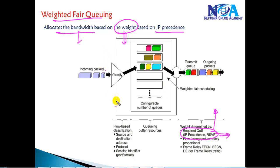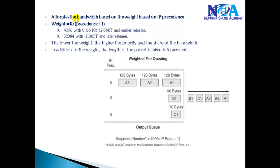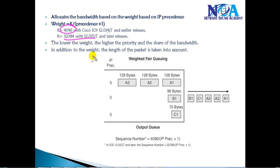The default formula for assigning weight is: Weight = K / (precedence value + 1). The default K value varies by IOS version — for IOS 12.0 and earlier it is 4096, and for versions prior to 12.0 it is 32384. The lower the weight, the higher the priority and share of bandwidth.